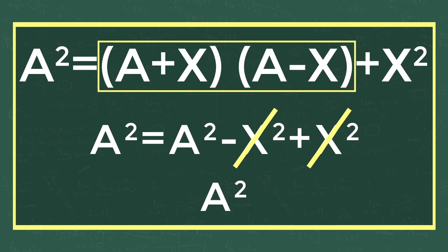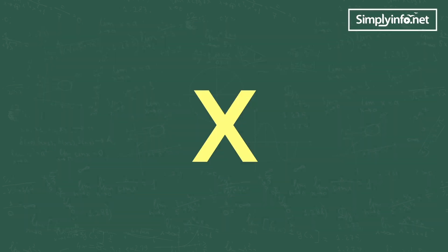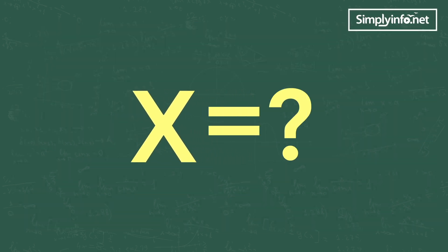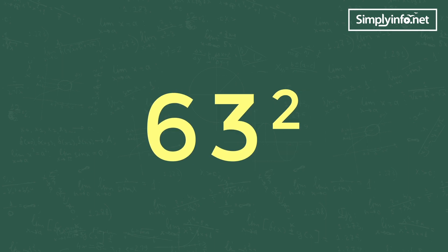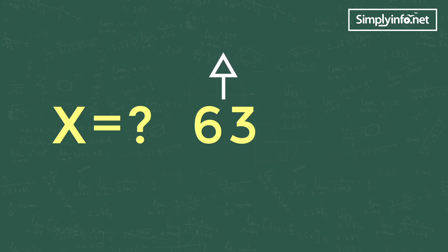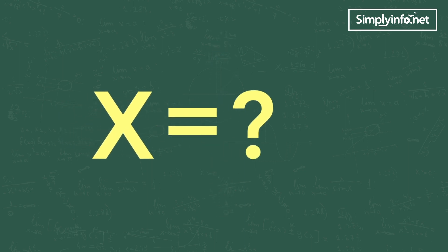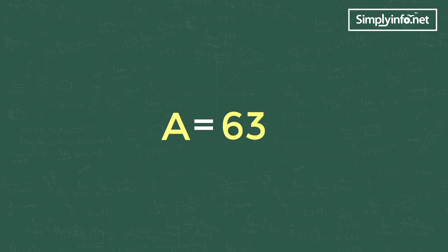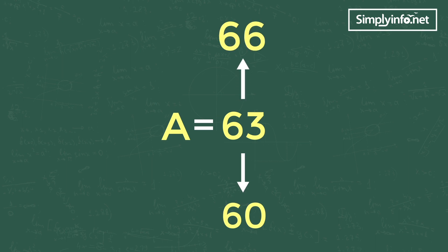The tricky part in this equation is finding X. For finding X, we need to increase or decrease the number to its nearest easy number — the difference between the original number and the revised number gives you the value of X. Taking a as 63, we decrease to the easy number 60 and increase to 66.